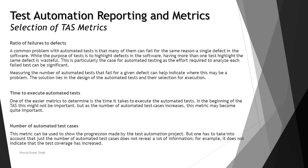The number of automated test cases metric can be used to show the progression made by the test automation project, but one has to take into account that just the number of automated test cases does not reveal a lot of information. For example, it does not indicate that test coverage has increased. Having a hundred test cases doesn't mean all hundred should be automated. It's important to document and determine what you are automating and whether it was really required to be automated.